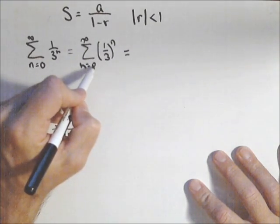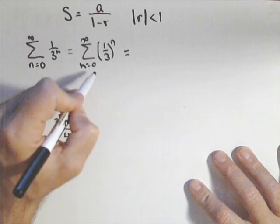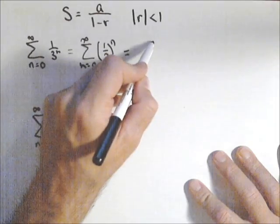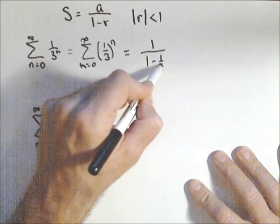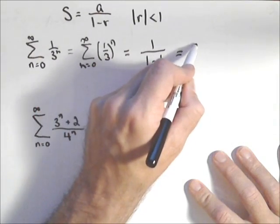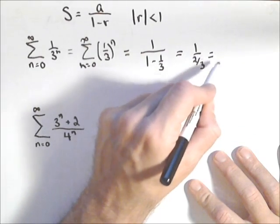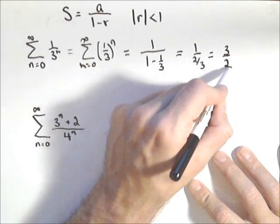So this one we can do. We need to calculate the first term. Always calculate the first term. Plugging 0 in for n gives us 1 third to the 0 or 1 over 1 minus 1 third. So 1 over 2 thirds. Flip and multiply and we get a sum of 3 halves.